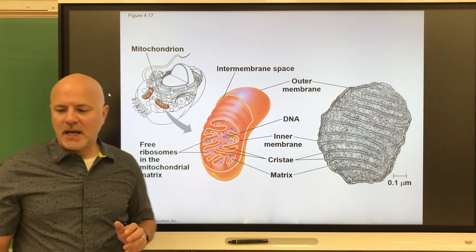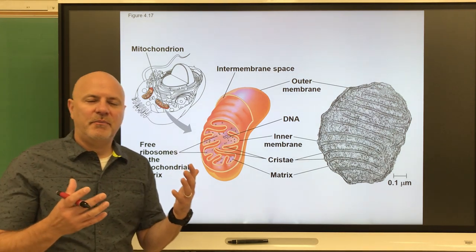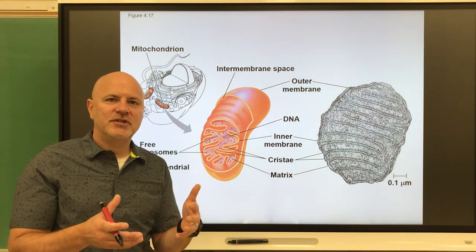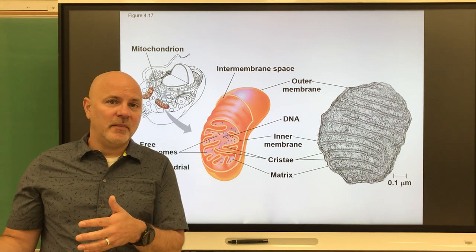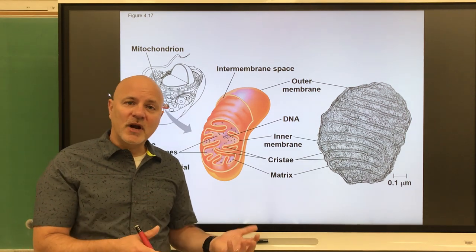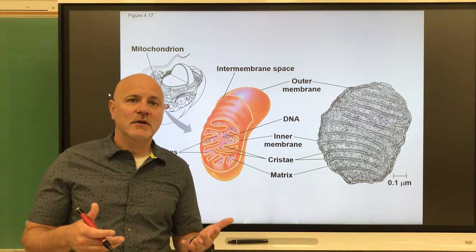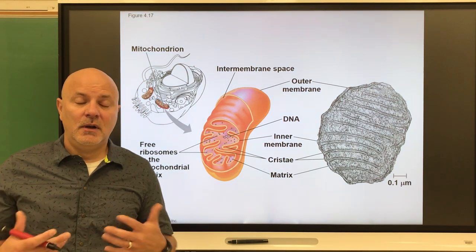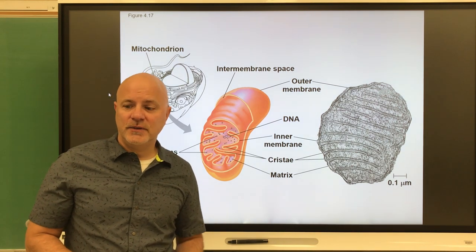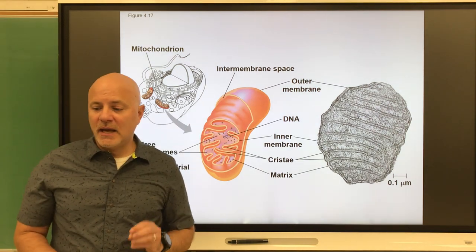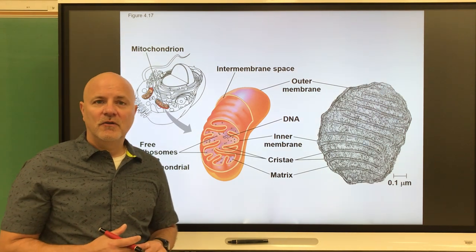Now let's move on to mitochondria — the organelle in which aerobic respiration occurs. Photosynthesis is where plants and algae take carbon dioxide and water to make organic molecules, specifically glucose, and also oxygen. In aerobic respiration, we do the opposite: we break down organic molecules, mostly glucose, using oxygen, to produce carbon dioxide and water. That is why we breathe — we take in oxygen to break down glucose so our cells can have energy, in the form of ATP.